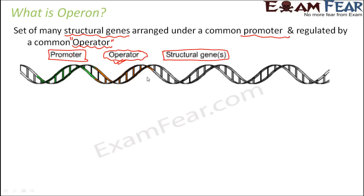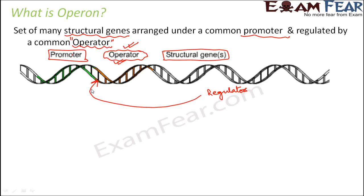Who decides whether the genes will be turned on or off? The operator plays a very important role in this decision, but it is not the operator that directly regulates gene expression. There are some proteins called regulators, also termed regulatory proteins. These regulators bind to the operator region and control gene expression by binding or not binding to the operator.